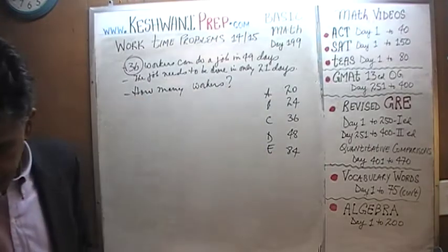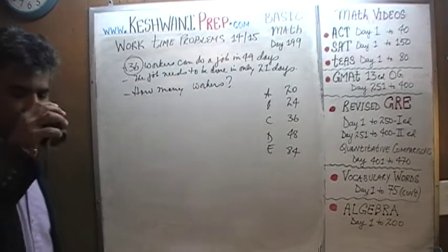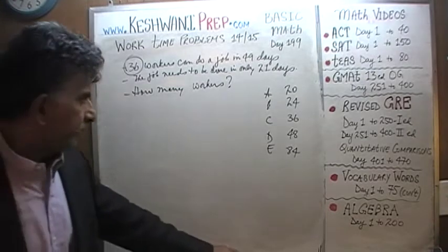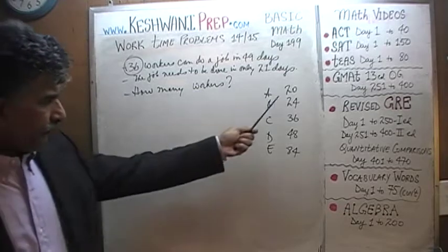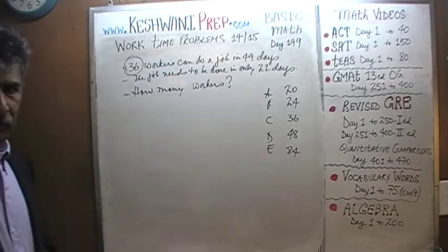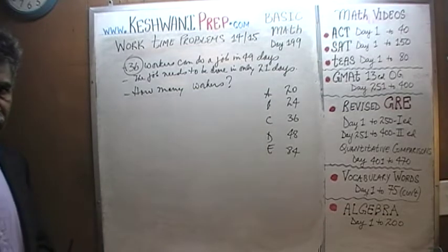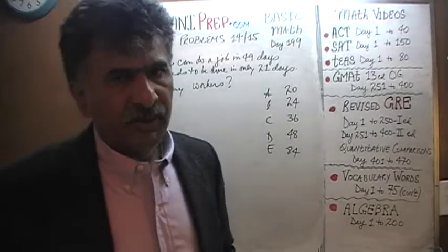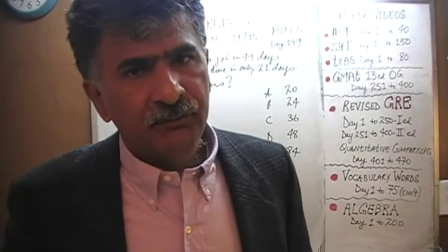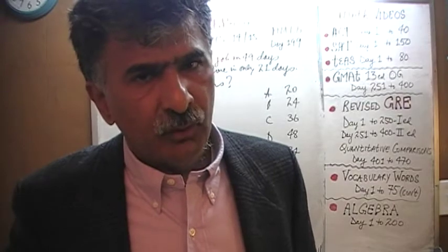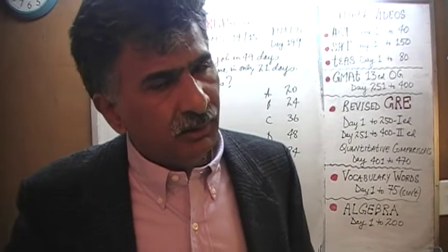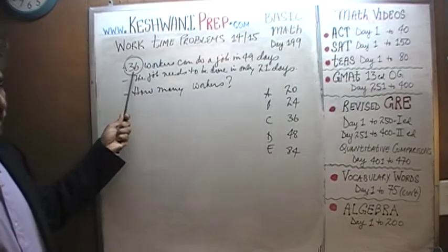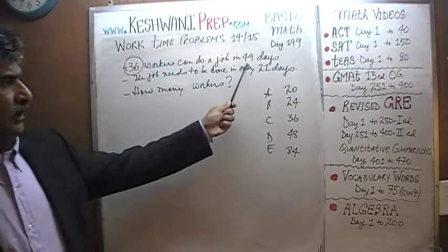All right. Here are the answer choices. First things first — let's look at the problem in a logical, systematic manner. Instead of jumping in and solving it classically in an academic way, let's look at it in a more logical way. We are told that 36 workers take 49 days.